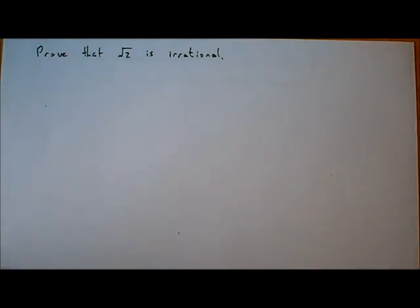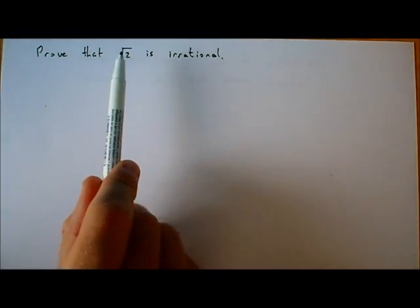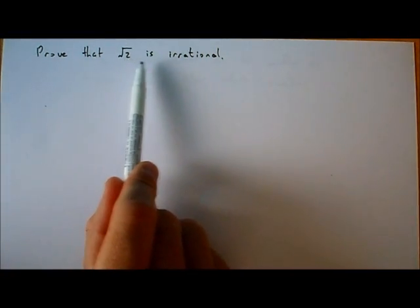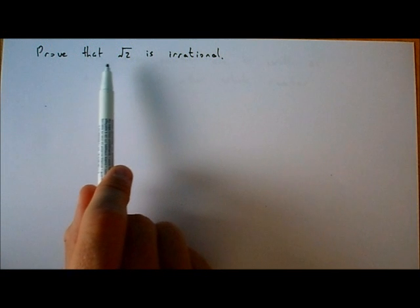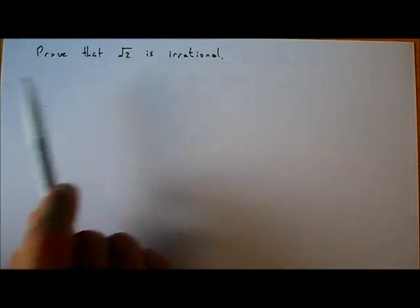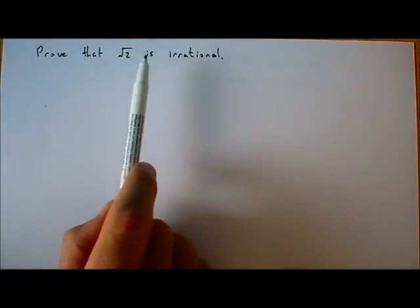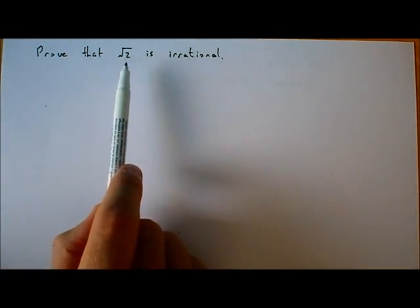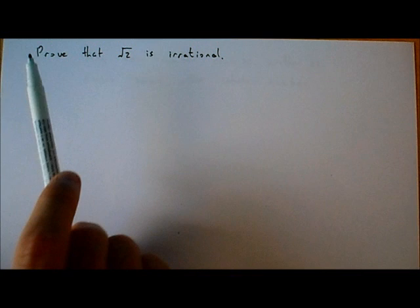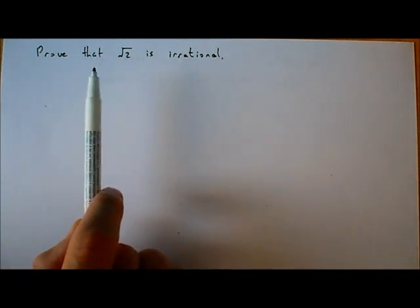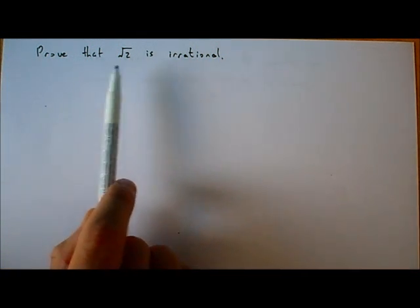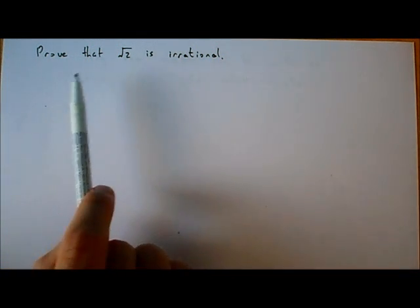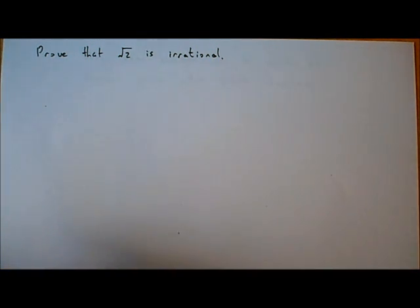In this video we're going to prove that the square root of 2 is an irrational number. We've talked about irrational numbers before and we know what they are - they can't be written as a fraction. So far all we've done is said that the square root of 2 is irrational, but now we're going to actually prove it.